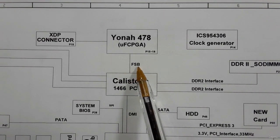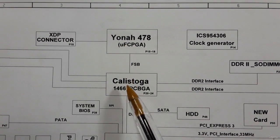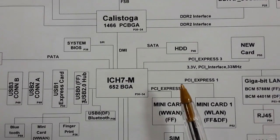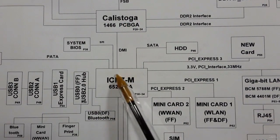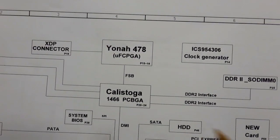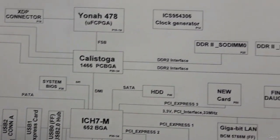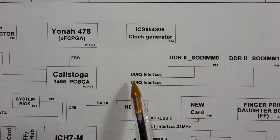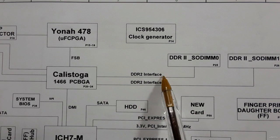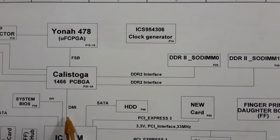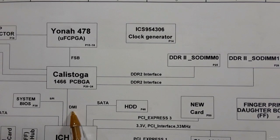The connection between the processor and the GMCH is the FSB, or Front Side Bus — just one connection. The GMCH is connected to the ICH via DMI, or Direct Media Interface. The frequency of the DMI bus is greater than that of the FSB. The connection between the GMCH and the RAM is the DDR2 interface.